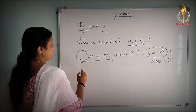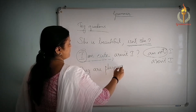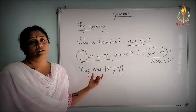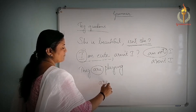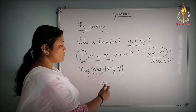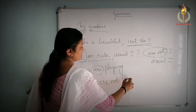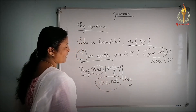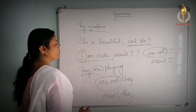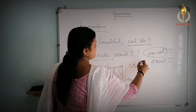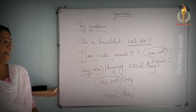If the sentence is 'They are playing,' your helping verb is 'are.' This is an affirmative sentence, so you need a 'not,' and your subject pronoun is 'they.' The shortened form of 'are not' is 'aren't,' so the tag is: 'They are playing, aren't they?'